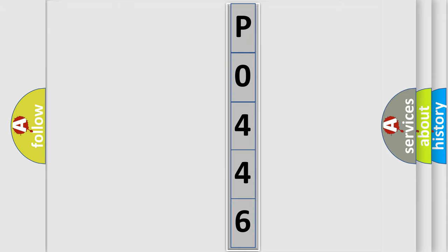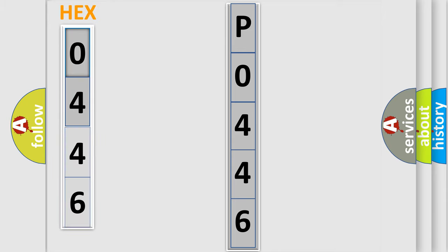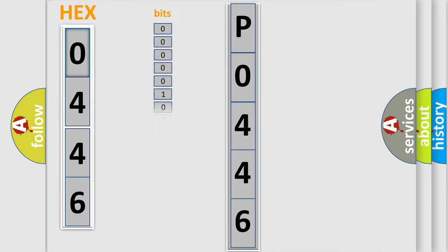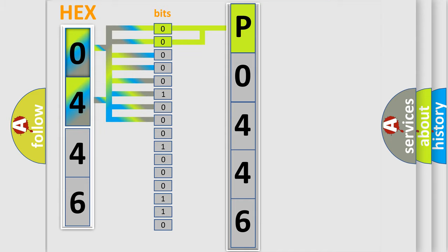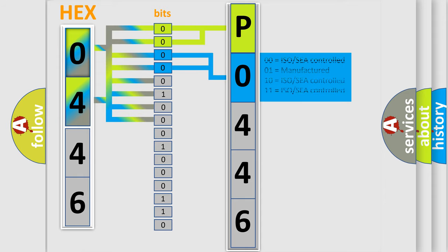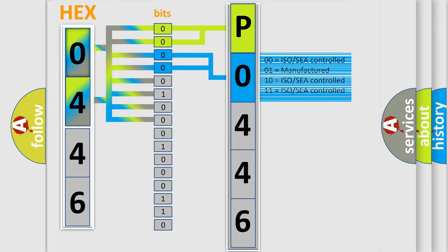The error code is split into two bytes consisting of 16 bits. One bit is the basic unit that each computer works with. The bit has two logical states: zero (low level) and one (high level). By combining the first two bits, the basic character of the error code is expressed. The next two bits determine the second character. The last bits of the first byte define the third character of the code.